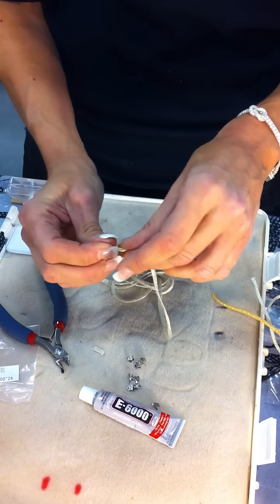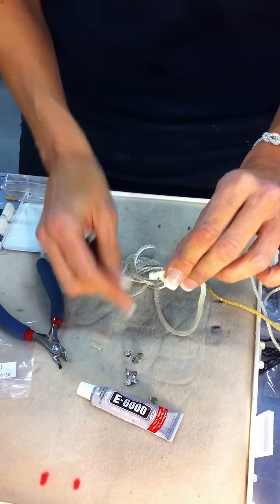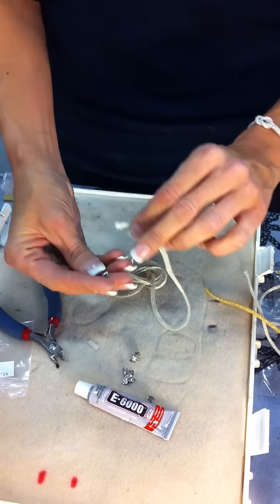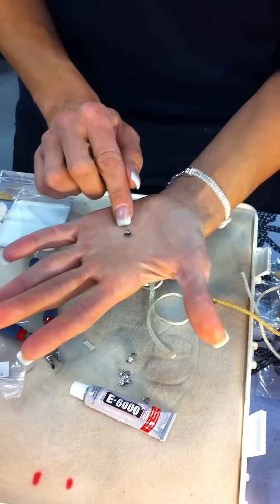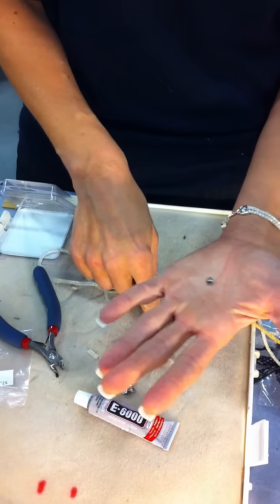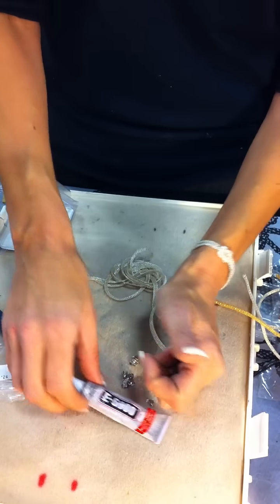Fold over a tiny little piece. The reason we're doing that is if you were to just put the ribbon end that has teeth right into there, it's going to pull.